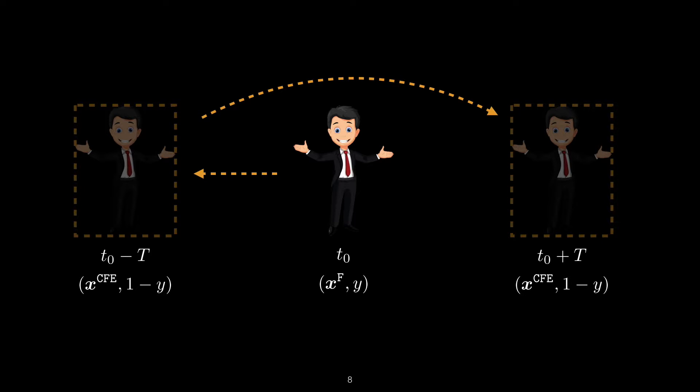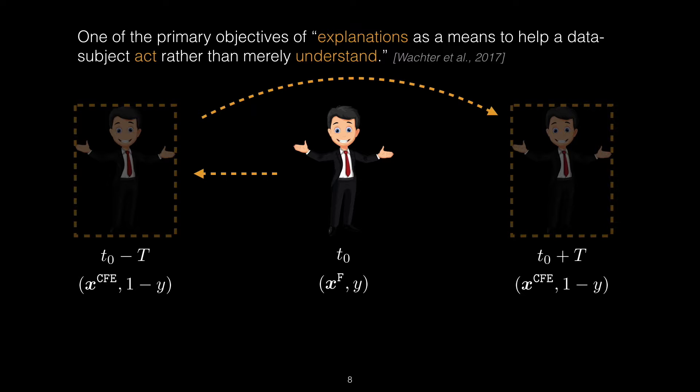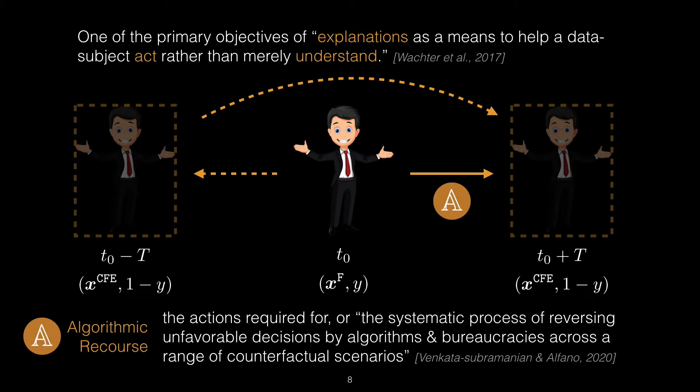But something is missing from this picture. In layman's terms, counterfactual explanations inform an individual where they need to get to, but not how to get there. And this is called recommendation. We recall that a primary purpose of an explanation is to increase the individual's agency by offering ways to act in order to achieve recourse. Thus, the missing link in this diagram is this line here, corresponding to the set of actions the individual must perform to realize the desired situation. This is referred to as algorithmic recourse.